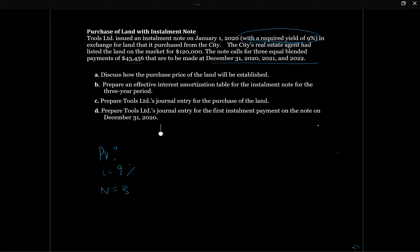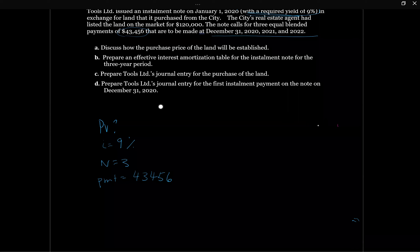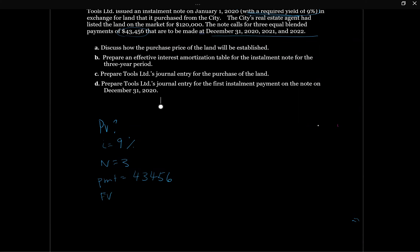The payment is the equal blended installment — the note calls for three equal blended payments, meaning this is a blended payment of interest and principal. Because there are three equal blended payments, the future value of the note is going to be zero. When the note matures, we pay back nothing because we're paying back the note in three equal blended installments.